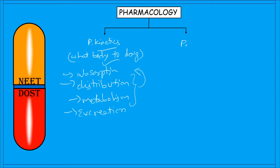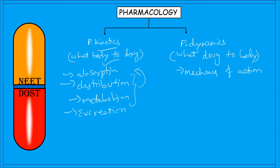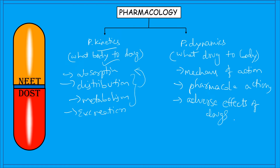The second division is pharmacodynamics — simply, what the drug does to the body when it is administered. It deals with the mechanism of action of the drug, pharmacological actions of the drug, and the adverse effects of the drug. A memory tip: pharmacodynamics contains the letter 'D', just like 'drug does to the body'.